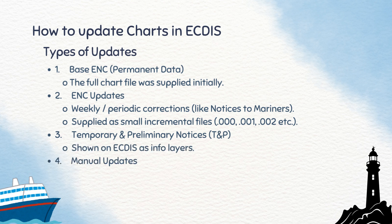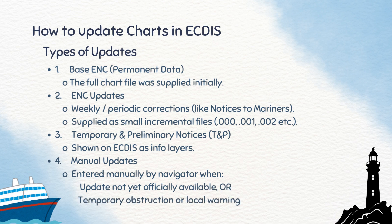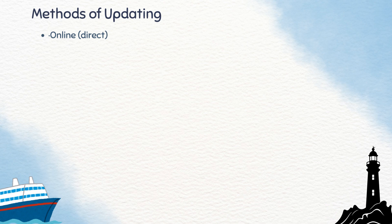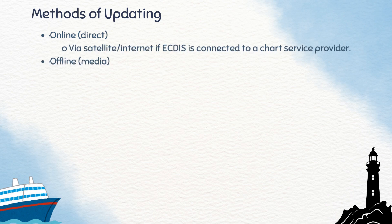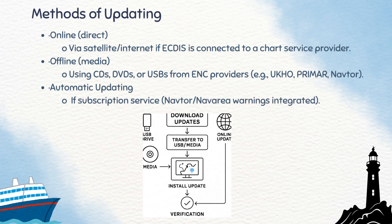There are also Temporary and Preliminary Notices, shown as information layers, and Manual Updates, entered by the navigator for local warnings or temporary obstructions. When it comes to methods of updating, you can do it online through satellite or internet, offline using CDs, DVDs, or USBs from providers like UKHO, Primar, or Navtor, or you can set it up for automatic updating if your system is subscribed to an integrated service.